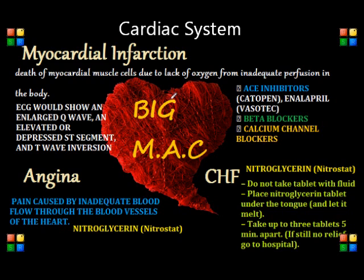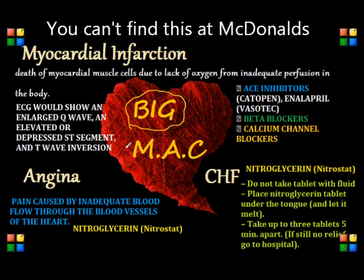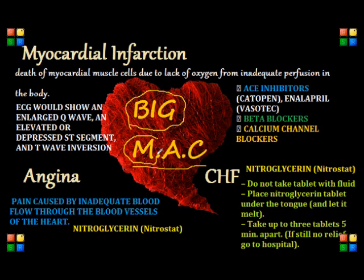So basically, I'm going to go through the essential information that you need to know for the NCLEX. I have gone over what I call the Big MAC, which basically covers the three biggest main cardiac diseases that you will most likely encounter in the NCLEX. That would include myocardial infarction for M, angina for A, and congestive heart failure for C.